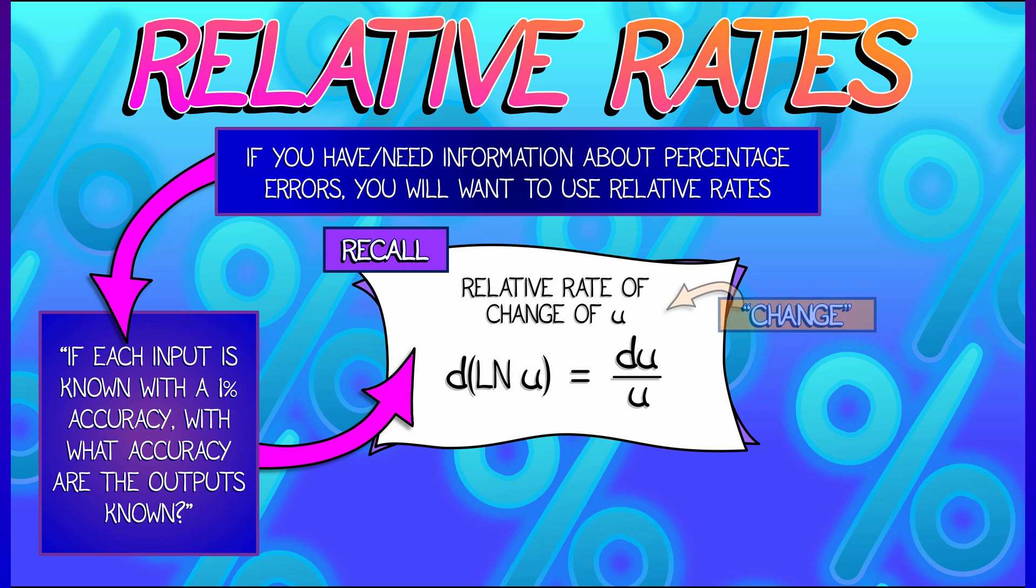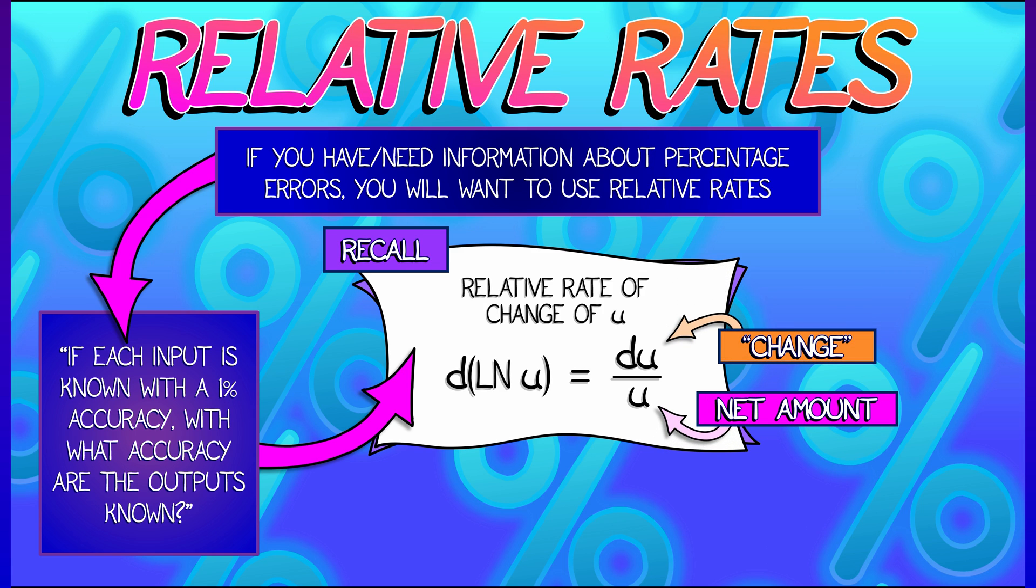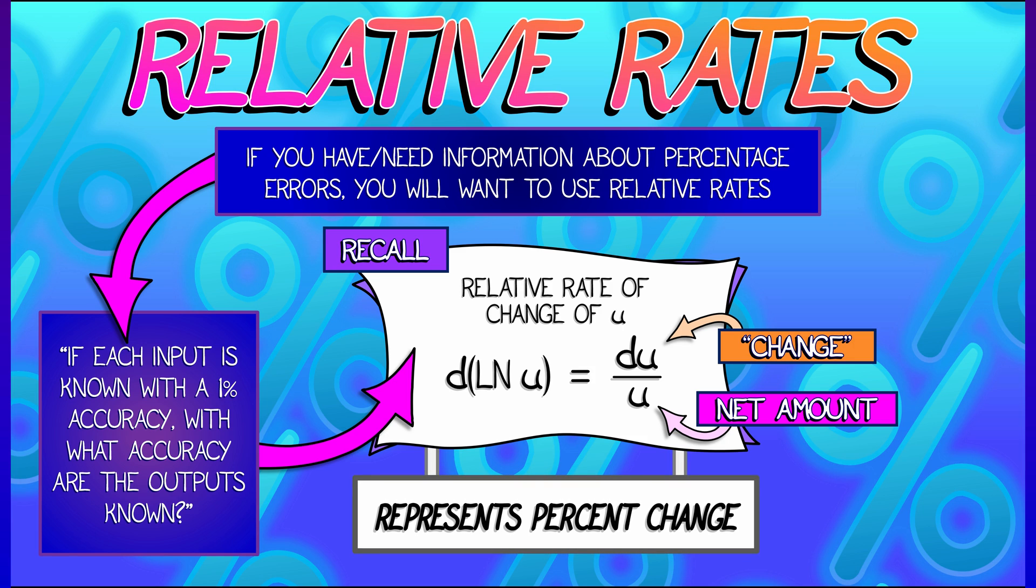Now think about this from an approximation point of view. du is like the change or the error, and u is the net amount. So du over u is really representing a percentage change or a percentage error.